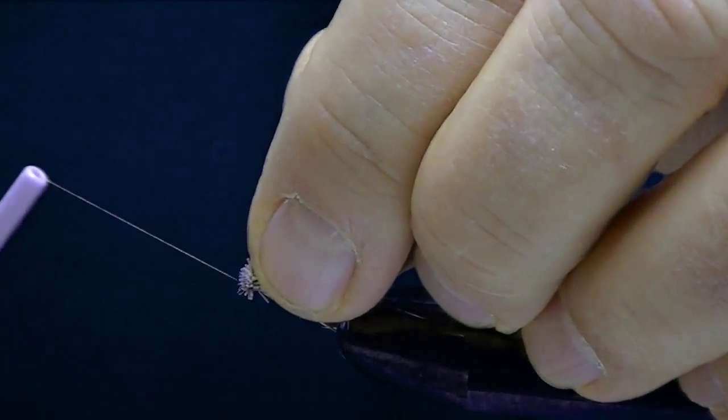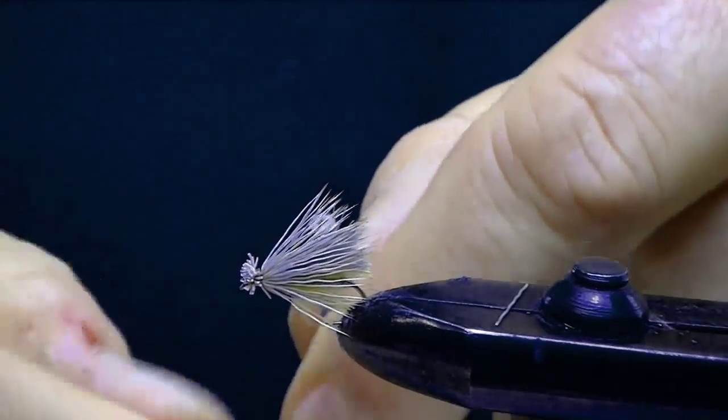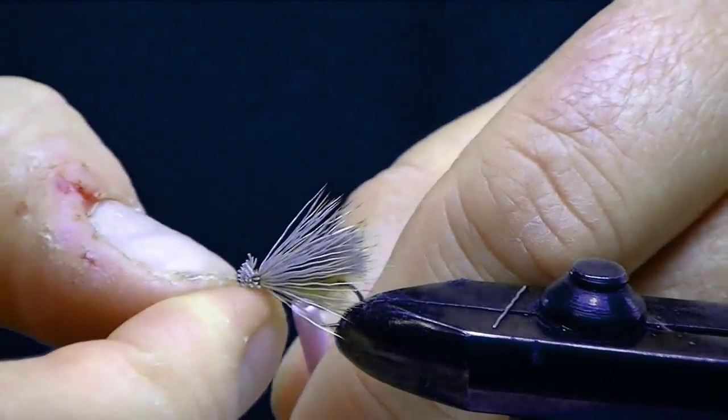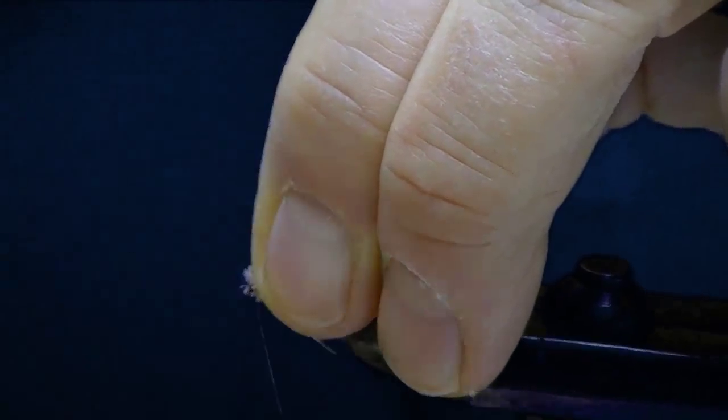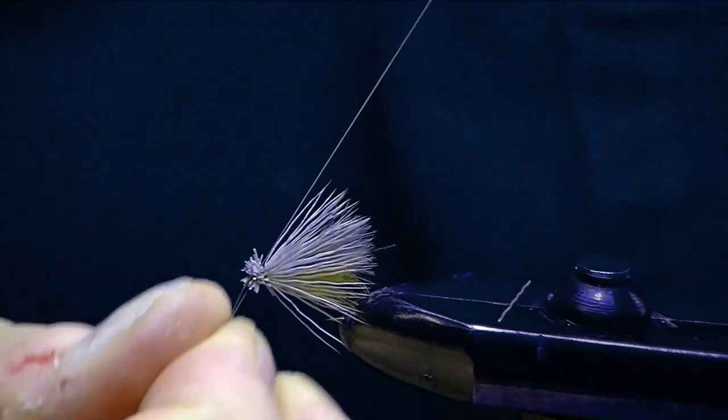Take my thumbnail and I kind of scoot it. Now I've taken my thread with one wrap and got up underneath the eye. I hold the hook and I take my thread and I whip finish that right underneath that eye.